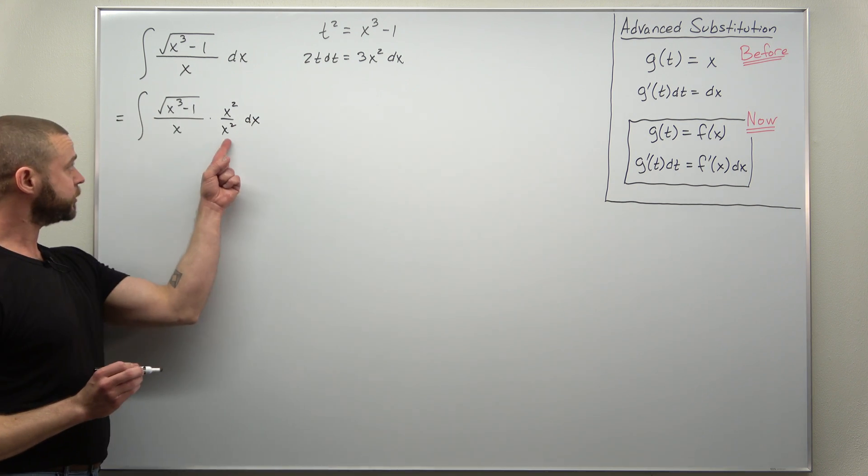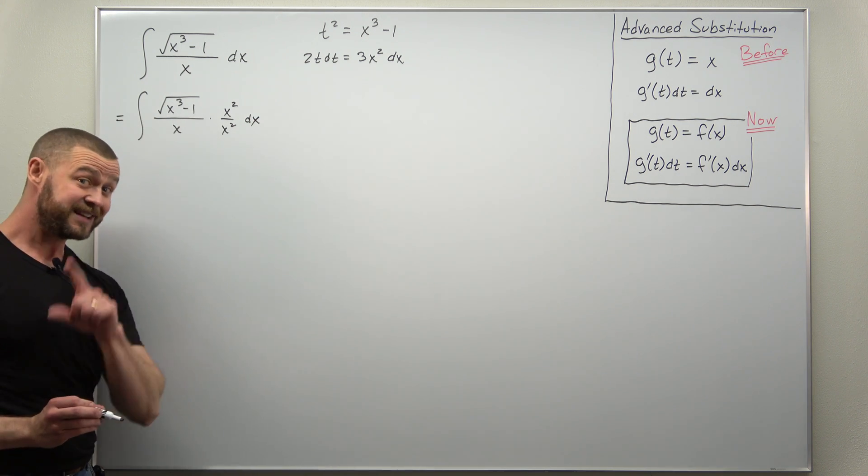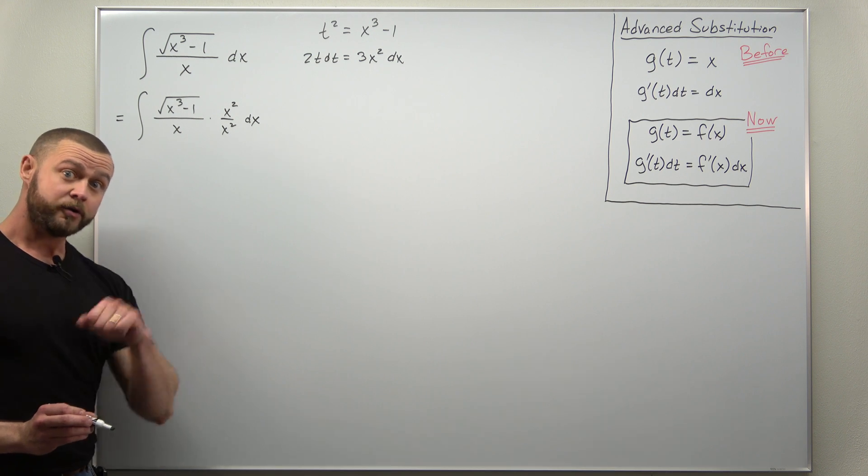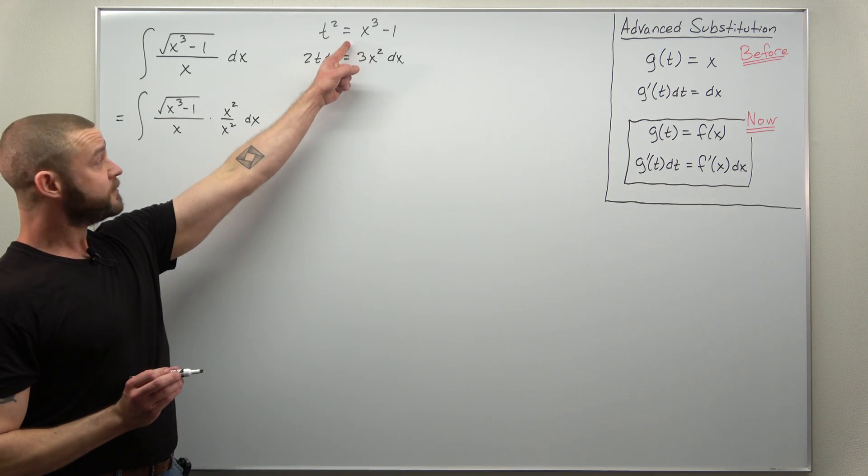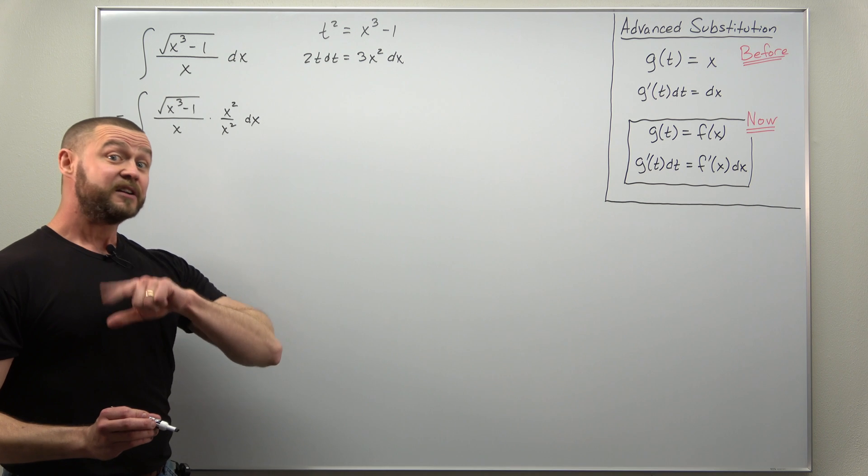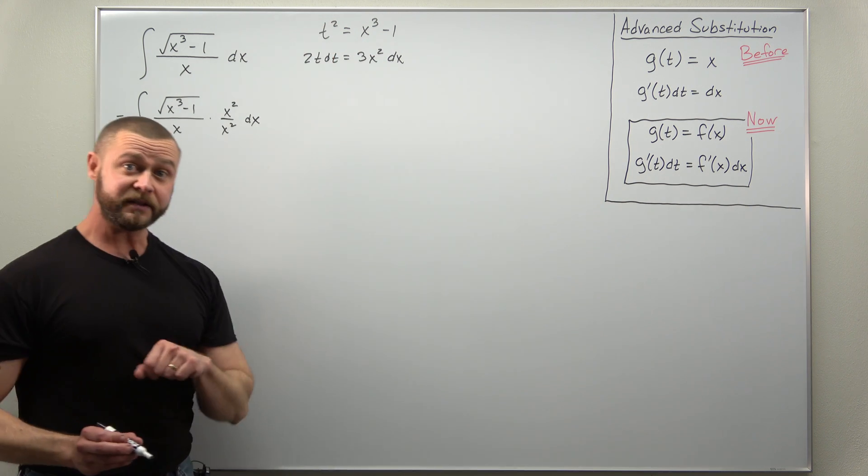All right and notice if I multiply those factors of x in the denominator you'll get x cubed which you can convert to t here by solving for x cubed, just add 1 to each side. So let's go ahead and combine everything here and rearrange this to make the conversion easily.